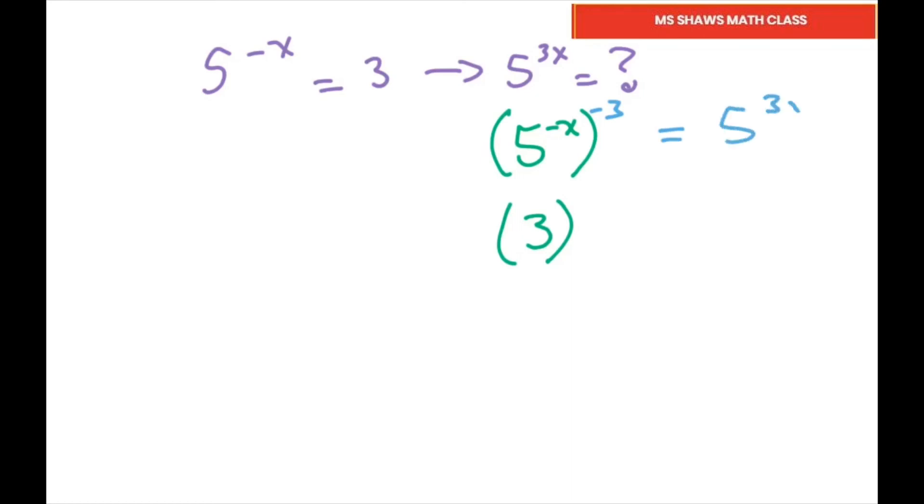And what am I going to put out here? Negative 3, because that equals 5 to the 3x using your power property. So I know this is the negative 3, so that's going to be 1 over 3 cubed, which equals 1 divided by 27. And that's it, thank you, have a nice day, bye bye.